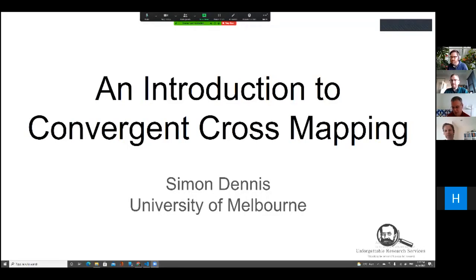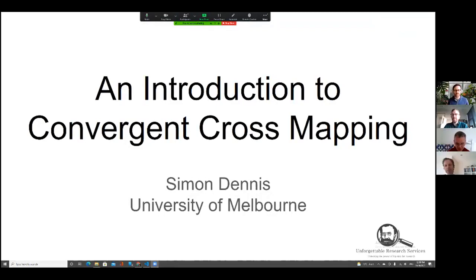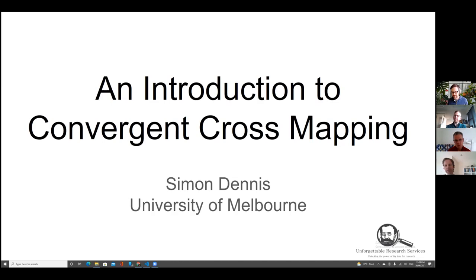Simon Dennis begins his talk, noting it will segue nicely from what Pete was saying about causal relations and how to infer those. He mentions some reservations about the lagged approach and will present an alternative — a specific method called convergent cross mapping, a method for extracting causal relationships between variables. This is embedded in a broader set of notions about how to understand time-varying phenomena, particularly psychological phenomena in the real world where there are potentially lots of interacting factors.